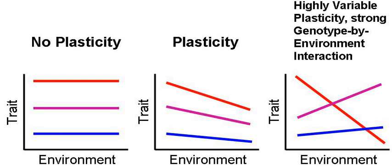In a controlled experiment conducted by Karen Warkentin, hatching rate and ages of red-eyed tree frogs were observed in clutches that were and were not attacked by the cat-eyed snake. When a clutch was attacked at six days of age, the entire clutch hatched at the same time, almost instantaneously. However, when a clutch is not presented with the threat of predation, the eggs hatch gradually over time, with the first few hatching around seven days after oviposition and the last of the clutch hatching around day ten. Karen Warkentin's study further explores the benefits and trade-offs of hatching plasticity in the red-eyed tree frog.